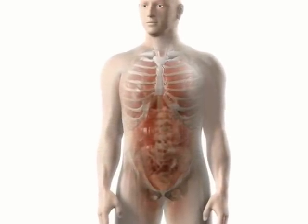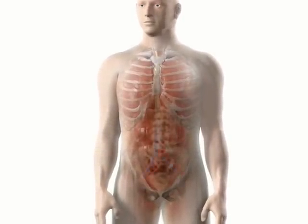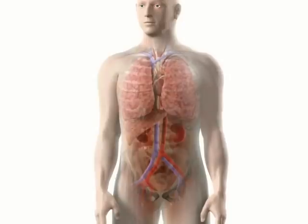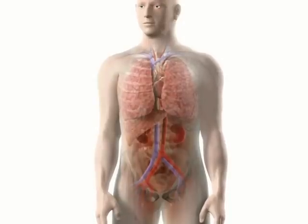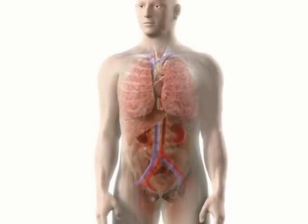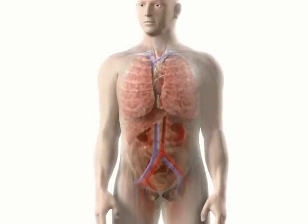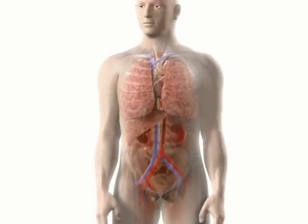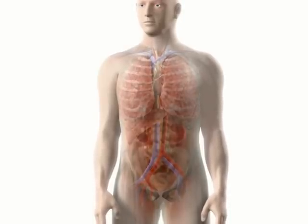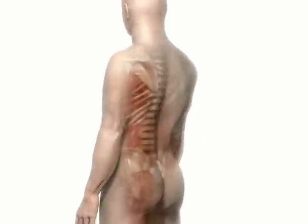During heart failure, the heart cannot circulate enough blood with normal cardiac filling pressures to meet the metabolic needs of the brain, kidneys, heart and other vital organs. The body responds by releasing neurohormones. Certain neurohormones help maintain blood pressure, but over time they cause heart failure to worsen.